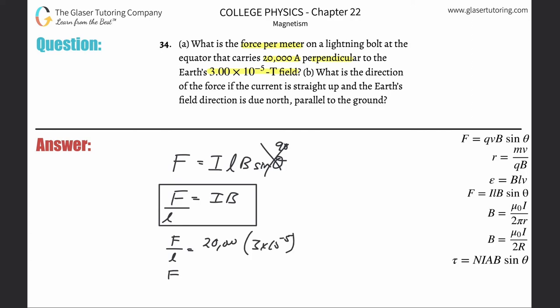Force per length is going to be equal to 20,000 multiplied by the 3×10^-5 Tesla field. All the units are in the appropriate unit. 20,000 times 3×10^-5 is 0.6, or 6.00×10^-1, and this would be Newtons per meter.